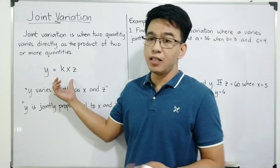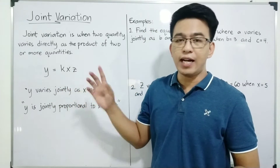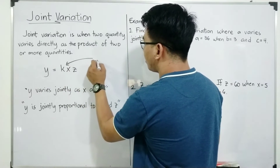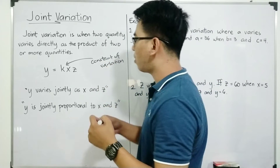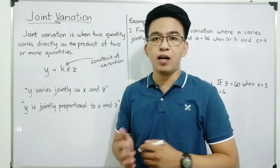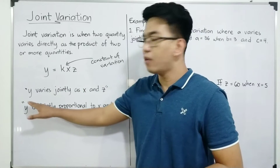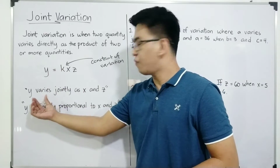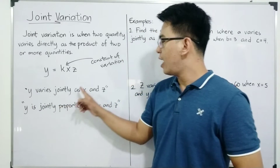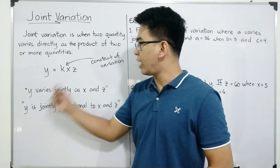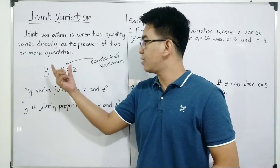Here is the general formula for joint variation: y is equal to k times x times z. Your k here is still the constant of variation, and your x, y, and z are the variables or quantities that have a relationship with each other. One phrase that can be converted to this formula is: 'y varies jointly as x and z.' This statement can be translated as y is equal to k times x times z, meaning this implies a joint variation.